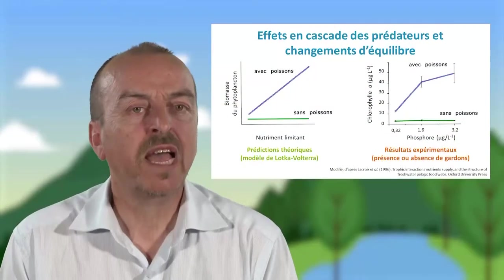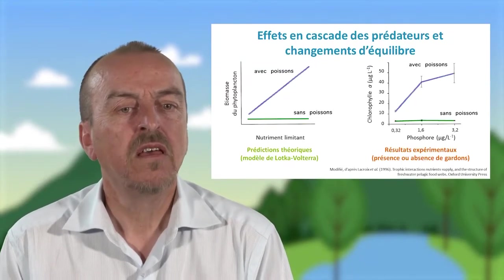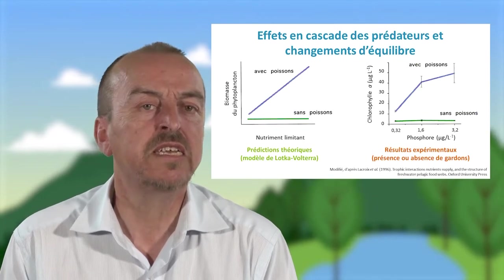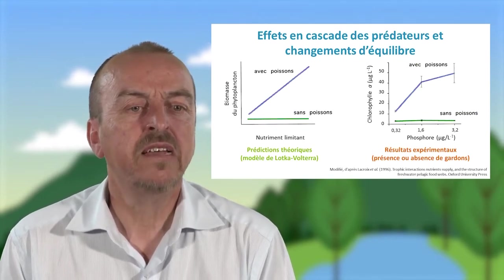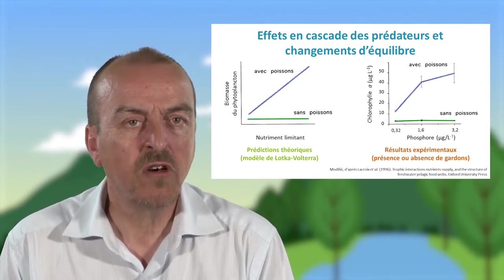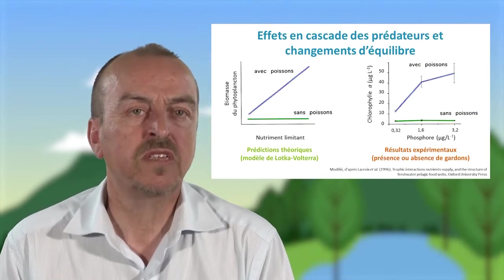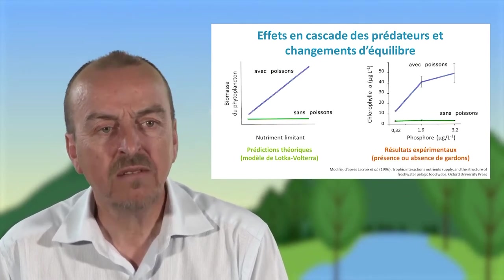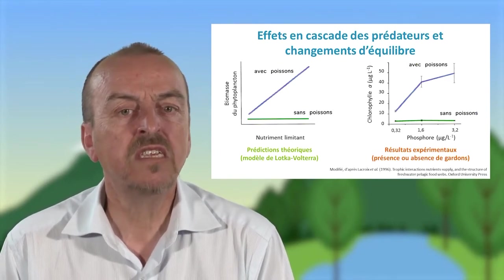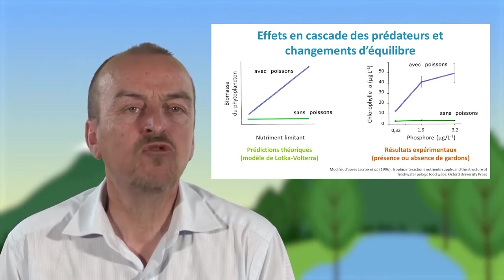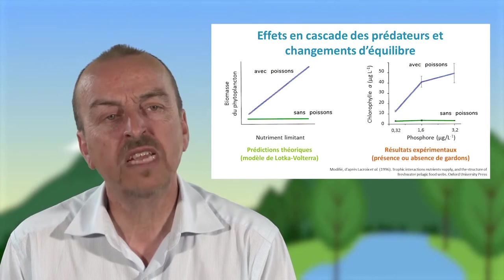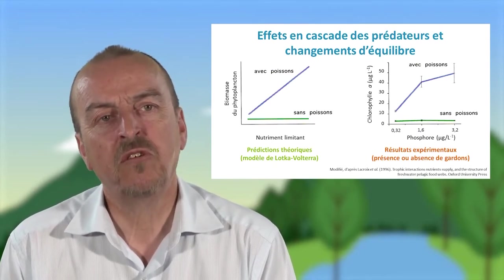Ceci a été testé expérimentalement. Vous pouvez voir ici une expérience réalisée dans un lac de la banlieue parisienne. Sur la partie gauche, les prédictions du modèle de Lotka-Volterra indiquent que dans des systèmes où il n'y a pas de poissons planctivores, une augmentation des nutriments ne devrait pas se traduire par une augmentation des algues, mais si on a des poissons planctivores, on devrait avoir une augmentation des algues. Sur la partie droite, les résultats de l'expérience confirment effectivement que dans des systèmes sans poissons, les algues se maintiennent toujours à un niveau très faible le long d'un gradient d'apport en phosphore, alors que lorsqu'on rajoute des poissons planctivores — ici des gardons — on a une augmentation de la biomasse d'algues avec l'augmentation de la teneur en nutriments.